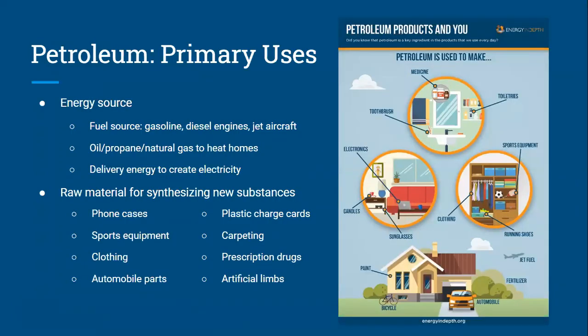Petroleum has a couple of primary uses. First, as an energy source — since burning hydrocarbons releases so much energy, it makes an excellent fuel source. It's also used as a raw material for making or synthesizing new substances. It can be anything from your phone case, to medicine, to carpeting, to clothing, even artificial lenses. There are a bunch of other examples included in the diagram to the right.